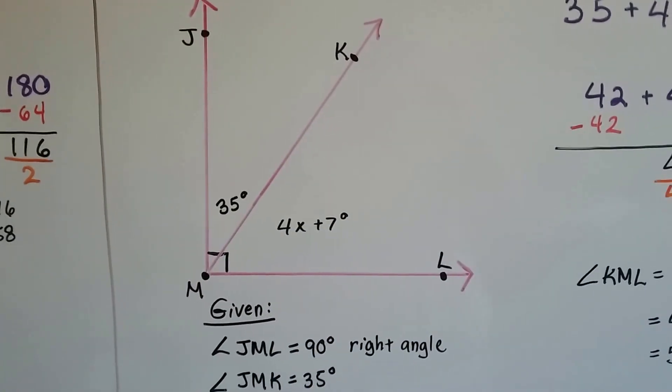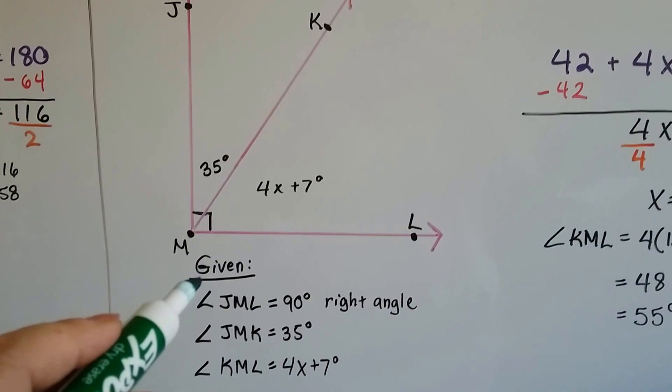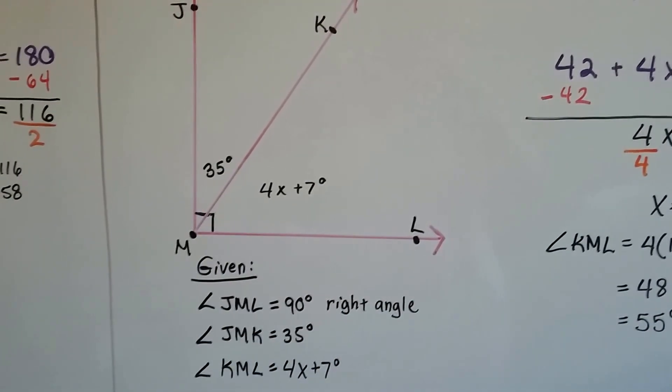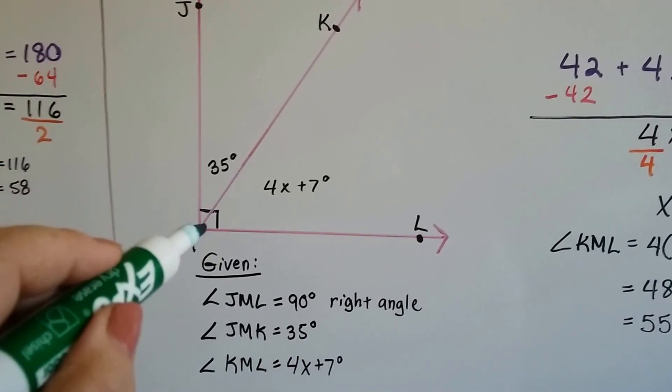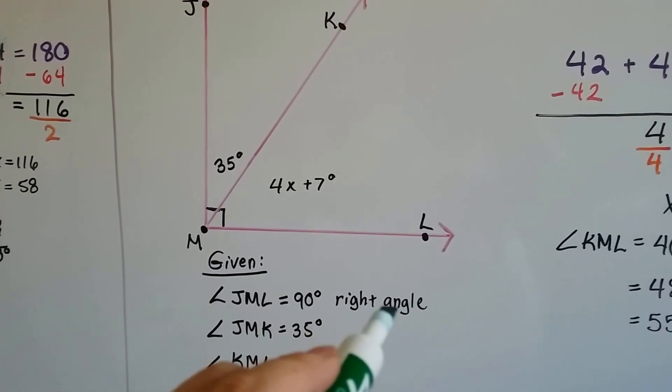Can you see what we've got here? Do you see the little box? So here's what's given to us. No work has to be done. They just gave this information to us for free. Angle JML equals 90 degrees. It's a right angle because we see the little box.